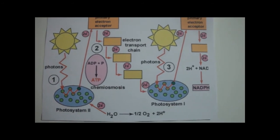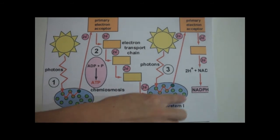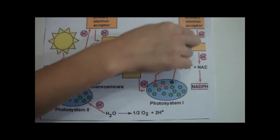Alternatively, the electrons may take a cyclical path involving only photosystem 1, where ATP is the only substance produced.